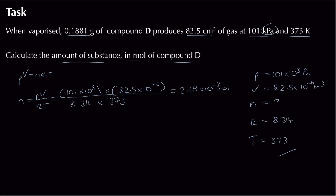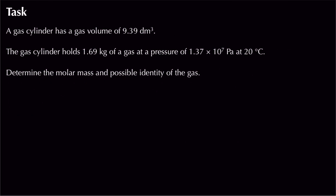You get a mark for rearranging, a mark for substituting values, and a mark for the correct answer. A follow-up question could ask you to use the given mass and calculated moles to find the Mr of the substance and predict its identity — that's what the next question covers.